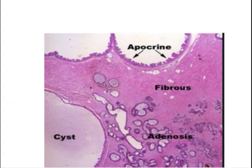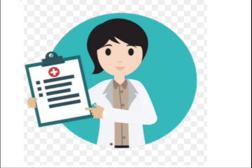Under the microscope, the following features were noted: presence of cysts, including a large cystic area. Some cysts are lined with apocrine cells. There was also fibrosis and adenosis, which is proliferation of small ducts.